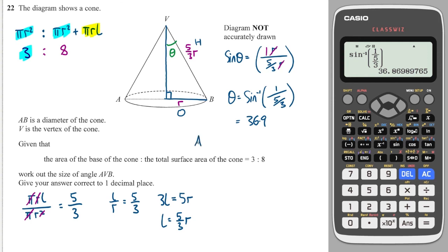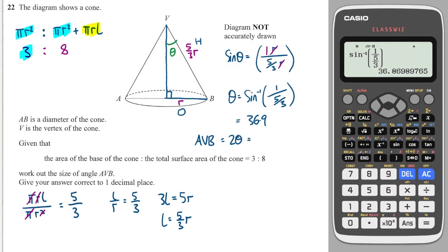And the angle AVB is equal to just two thetas, which is equal to 2 times 36.9. So our answer is 73.7.